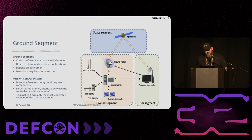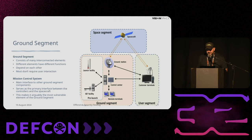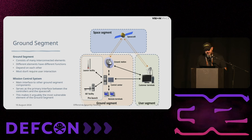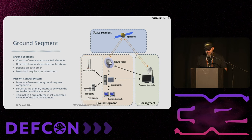The ground segment consists of many interconnected components or elements. You can see on this orange part where exactly it lies in the space mission. It consists of different elements that perform different functions but all depend on each other, either by receiving input from or sending outputs to other components. Most of those components don't require any user interaction, and this brings us to the Mission Control System, which is the main interface between the ground station and other components. It also serves as the primary interface between the spacecraft controllers and the spacecraft itself, which makes it the most vulnerable system in the whole ground segment.